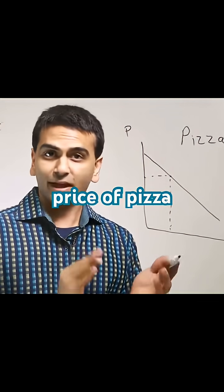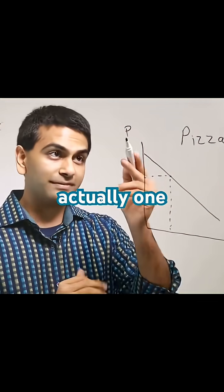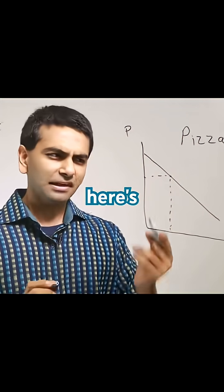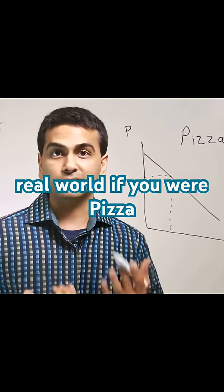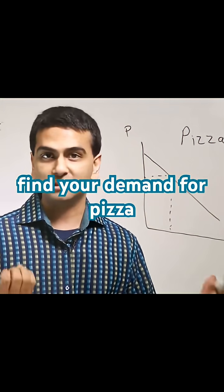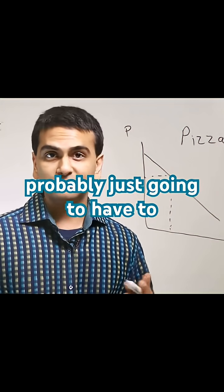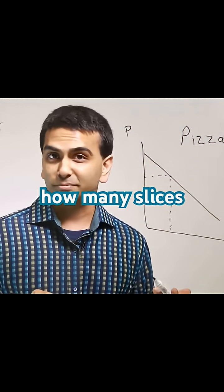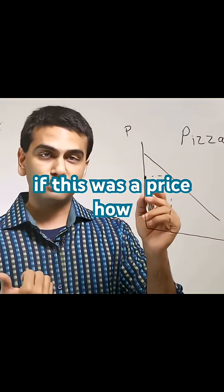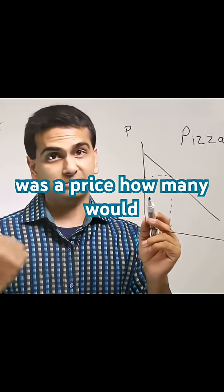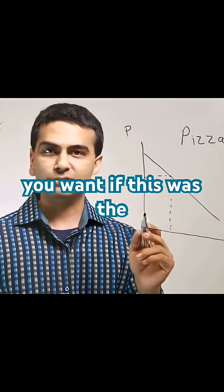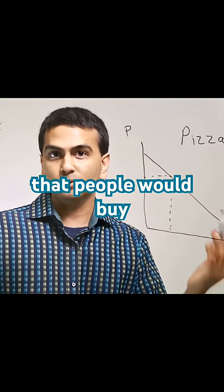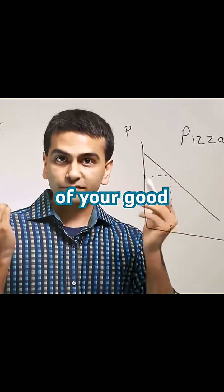Here's the thing — the price of pizza is actually one of the axes on the demand curve for pizza. Here's how the demand curve is really made in the real world. If you were Pizza Hut and you wanted to find your demand for pizza, you'd probably just have to call people up in a survey and ask them how many slices of pizza they would want at different prices. So really, this demand curve represents the different quantities that people would buy based on different prices of your good.